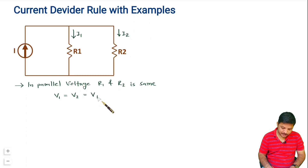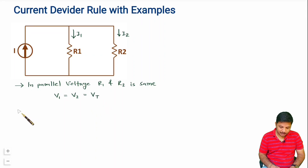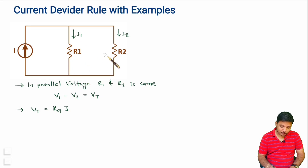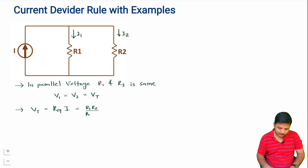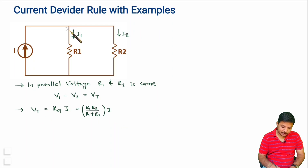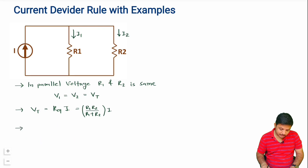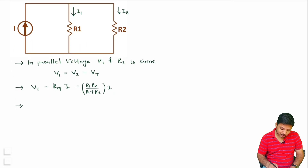Let us call that voltage Vt. To calculate Vt, we can say Vt equals R_equivalent multiplied by total current I, where R_equivalent is the parallel combination of the resistors. With two resistors, R_equivalent equals R1 times R2 divided by R1 plus R2, so Vt equals (R1·R2)/(R1+R2) times I. Now, the voltage across R1 is also Vt.